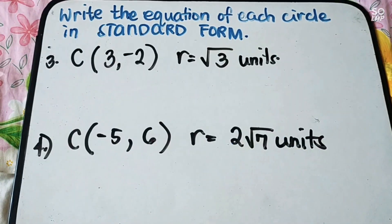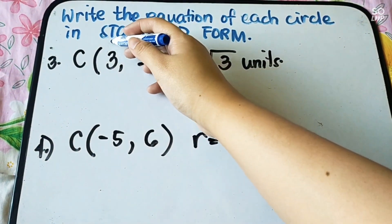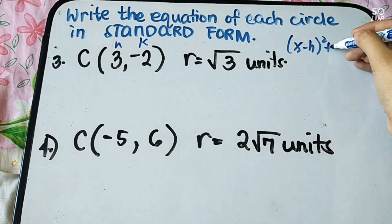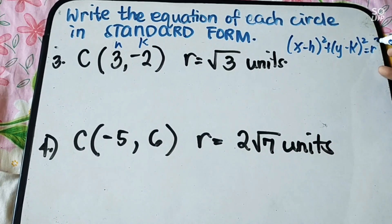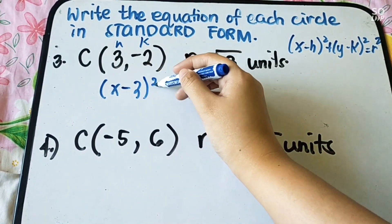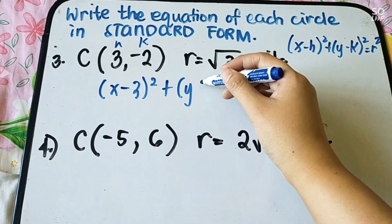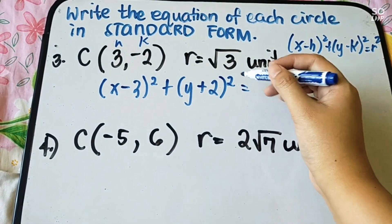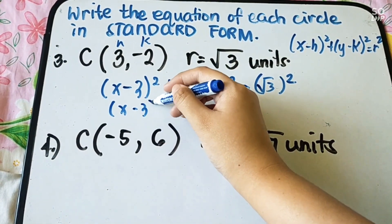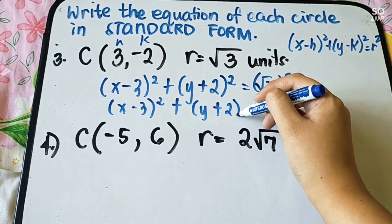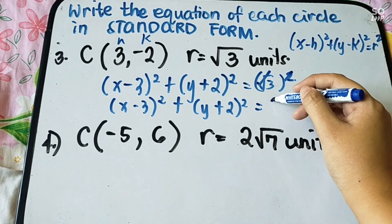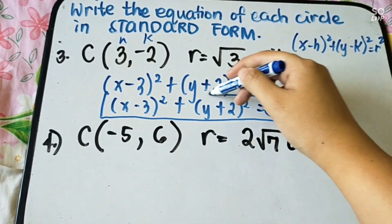Number 3: h equals 3 and k equals negative 2. Writing the standard form: (x minus h) squared plus (y minus k) squared equals r squared. Since k is negative 2, it becomes positive, so: (x minus 3) squared plus (y plus 2) squared equals (square root of 3) squared, which equals 3. This is your standard form.